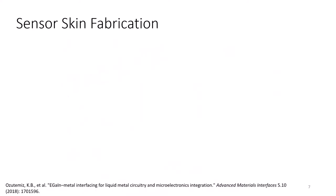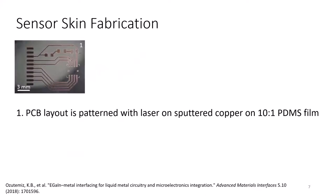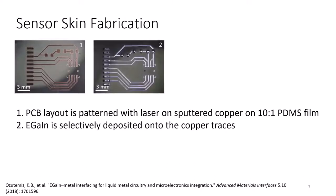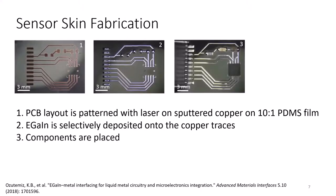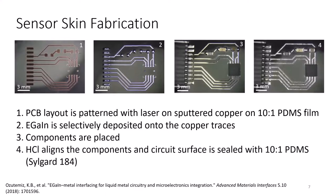This is a brief overview of the fabrication technique used to make the sensor skin. First, the PCB layout is patterned with a laser on evader copper on 10-to-1 PDMS foam. Next, e-gain is selectively deposited onto the copper traces. Then the components are placed. And finally, HCL vapor aligns the components and the circuit surface is sealed with 10-to-1 PDMS. Further details can be found in the paper E-gain Metal Interfacing for Liquid Metal Circuitry and Microelectronics Integration.